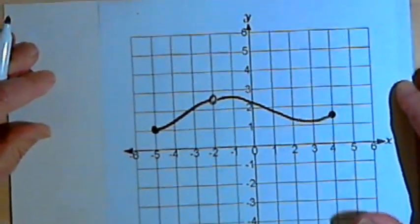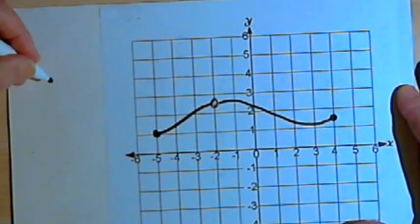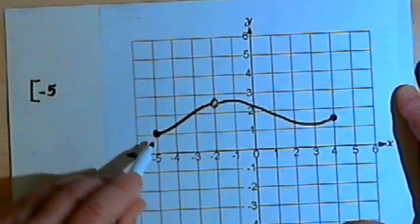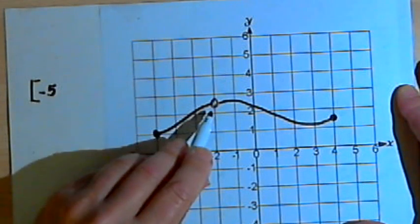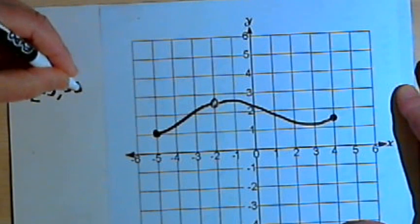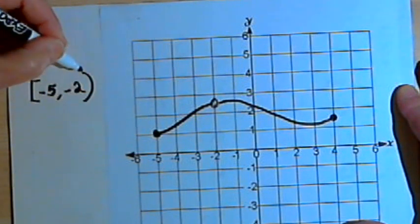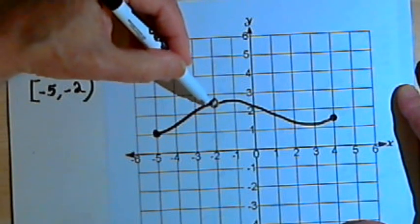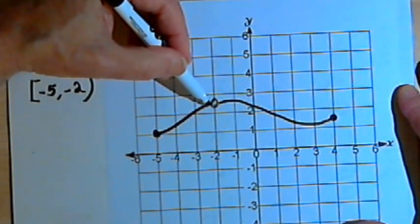So I can describe this using interval notation. I can start out with a square bracket and then the negative 5. The square bracket is saying that negative 5 is included in this first interval. I'll put in a comma, and then a negative 2, and then I'll finish it off with a round parenthesis, showing that we're going up to negative 2, but not quite reaching it.